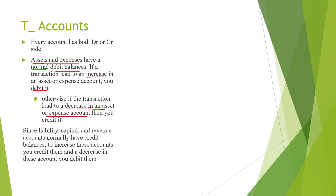For example, if you have money in the bank and you issue a check, that transaction will decrease the asset account balance, so you credit the amount issued for the check. If you make a deposit, it increases the asset account balance, so you debit the amount. Since liability, capital, and revenue accounts normally have credit balances, to increase them you credit them and to decrease them you debit them.